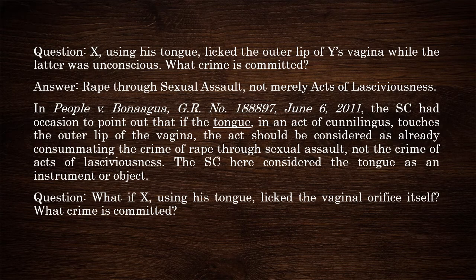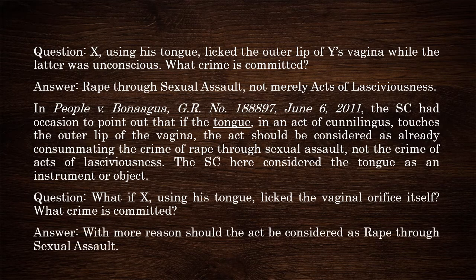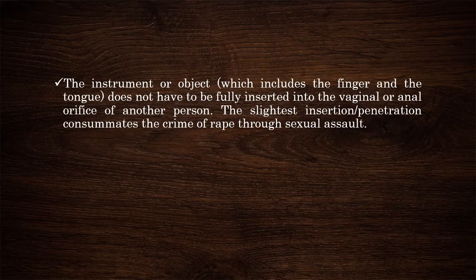Question: What if X, using his tongue, licked the vaginal orifice itself? What crime is committed? Answer: With more reason, the act should be considered rape through sexual assault. Take note that the instrument or object — which includes the finger and the tongue — does not have to be fully inserted into the vaginal or anal orifice. The slightest insertion or penetration consummates the crime of rape through sexual assault.